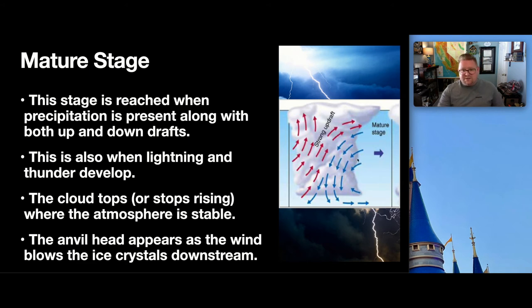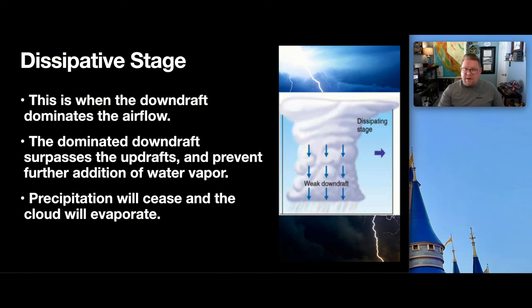So, now you've got this really incredible, intense storm. And then, at some point, you no longer have the formative updraft that is refueling or recharging the system. So, this is when the downdraft has dominated all the rain flow itself and surpasses the updraft, preventing further addition of that water vapor. And then, precipitation will just essentially cease, because there's not a continued source of new water vapor. And, the cloud will essentially evaporate. And, that's really the process of these very large thunderstorms that we see.